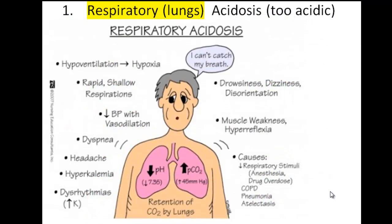The first condition is respiratory acidosis. This is where there's too much carbon dioxide in the lungs. The lungs are retaining too much carbon dioxide, therefore the pressure of the carbon dioxide increases. If there's too much CO2, the weak acid, that will increase the hydrogen ion concentration, therefore decreasing the pH.